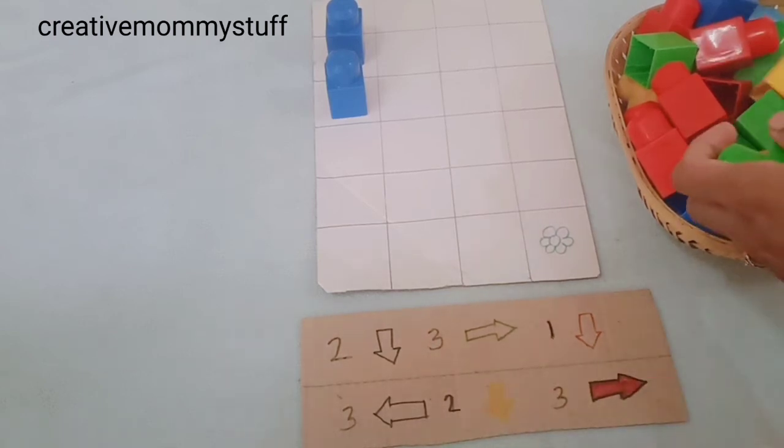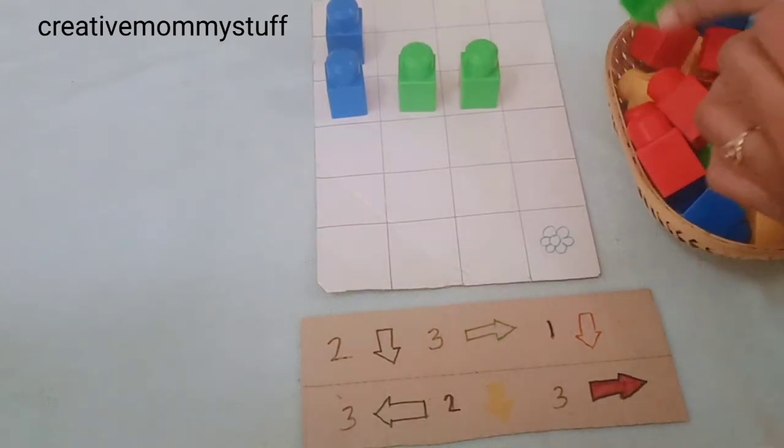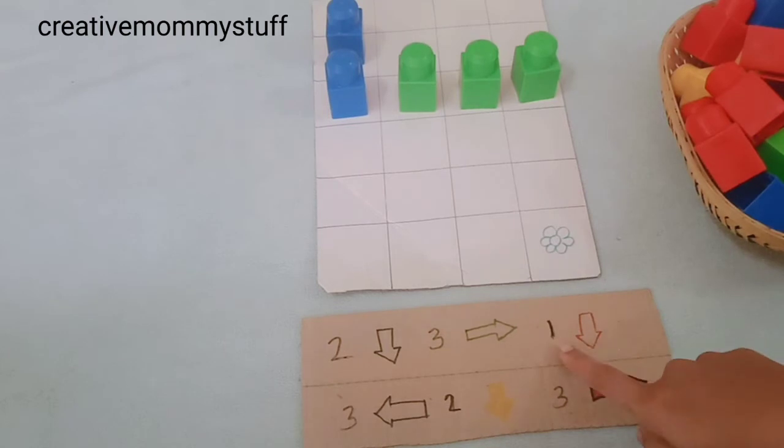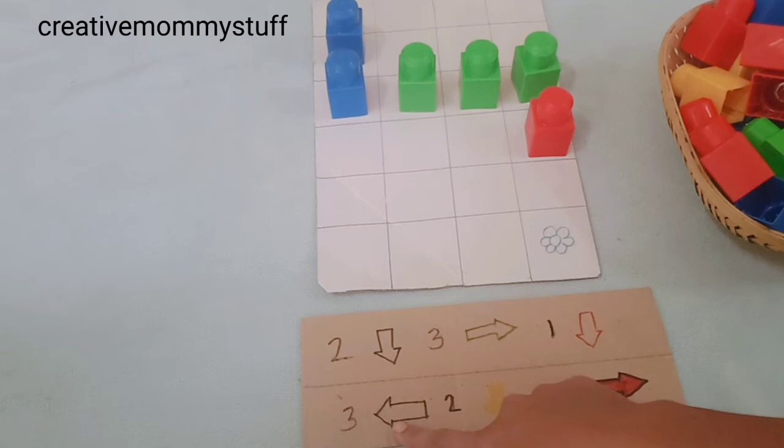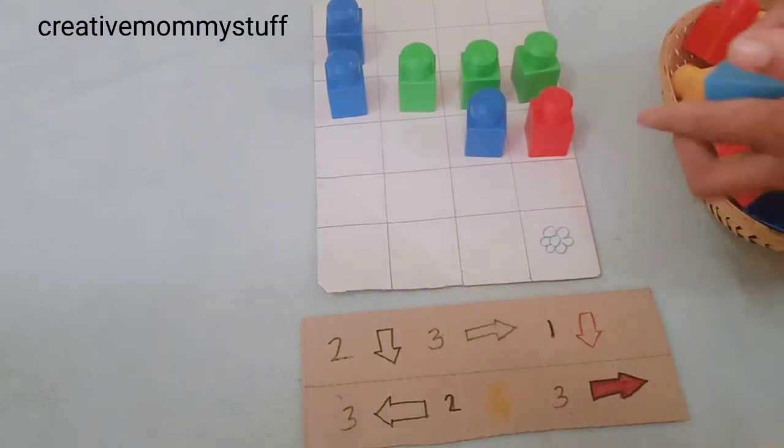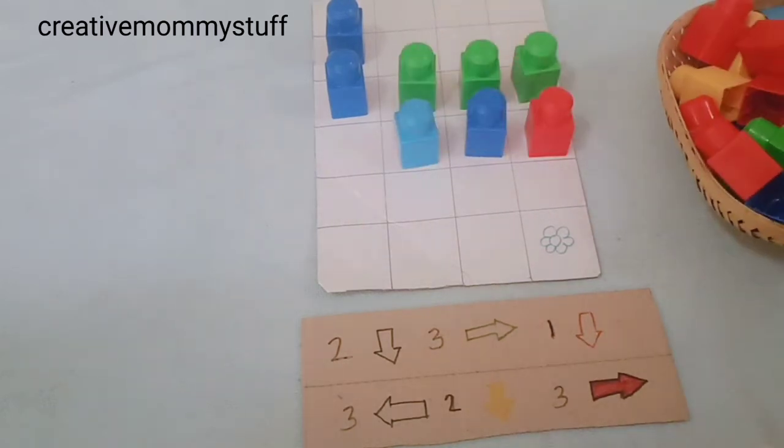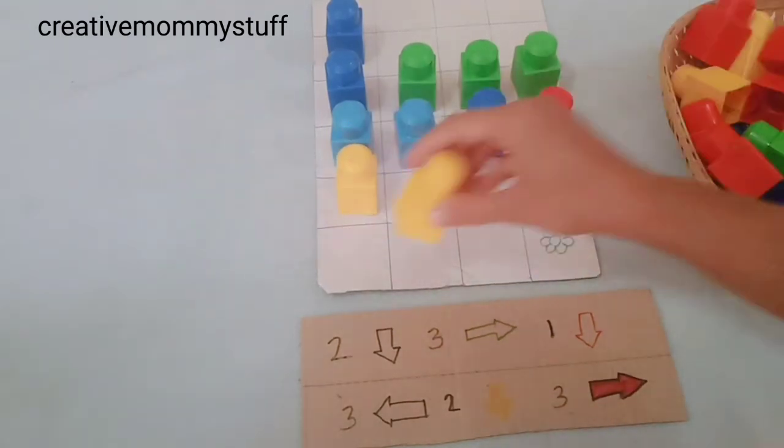So it is three right—one, two, three right—and one down with red color. So one down. Next is three left with blue color, so one, two, three. And then two down with yellow color, one, two.